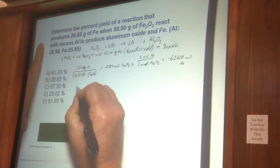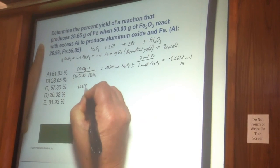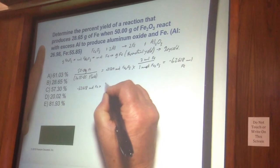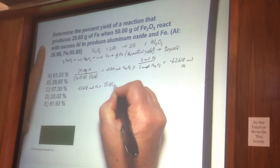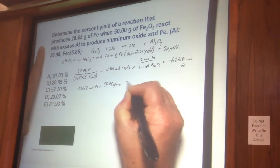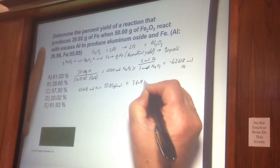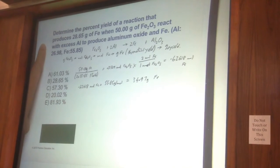Now we get the mass of this. We multiply by 55.85 grams per mole. That gives us 34.97 grams of iron.